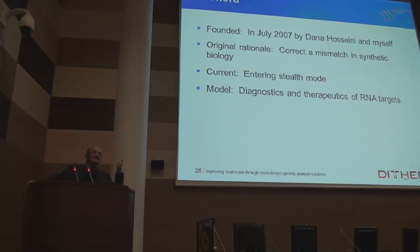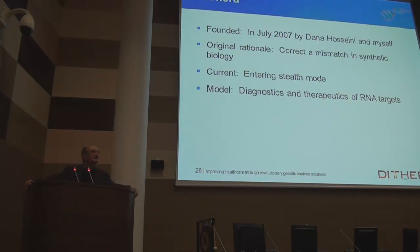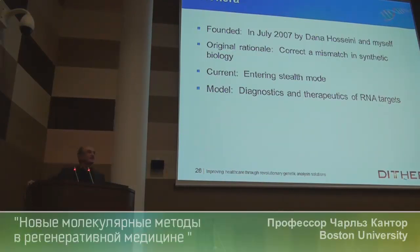Remember the context: I'm going to treat you with cells. If something goes wrong, I want to know it. But the cells are already in the body, so I'm going to have to image them, in principle at a molecular level, to tell that something's gone wrong. And ideally, if something's gone wrong, I want to kill those cells. If the abnormality leads to a secreted product, I can find it in the blood. If it leads to a cell surface product, I can find it with antibodies. But if it leads to an abnormal internal product, that's the hard problem, and that's what we're trying to solve here.